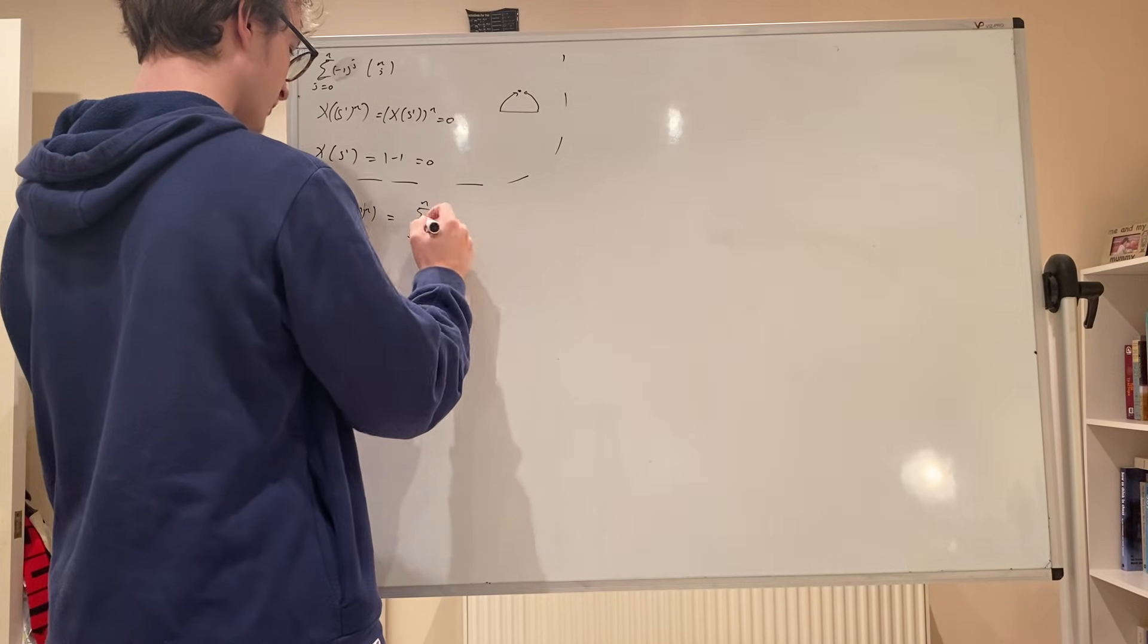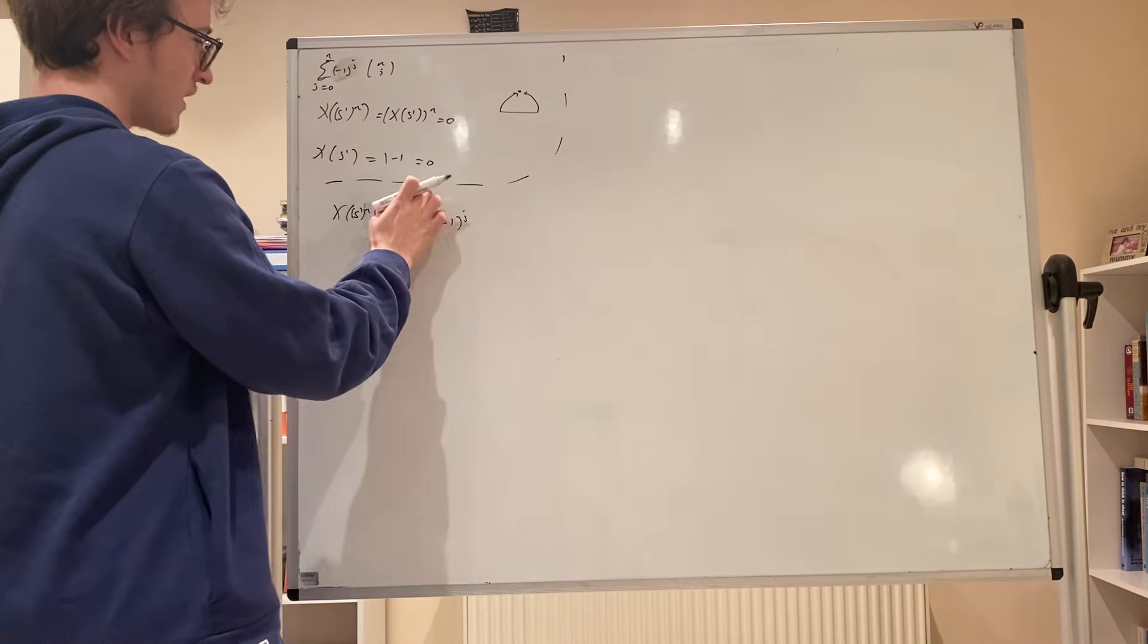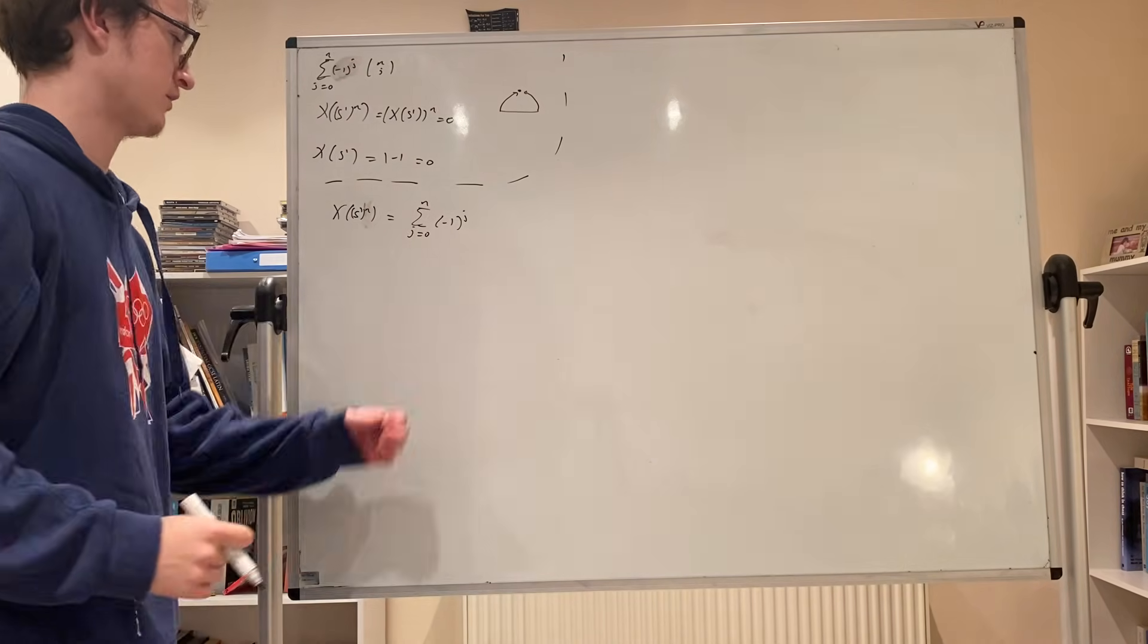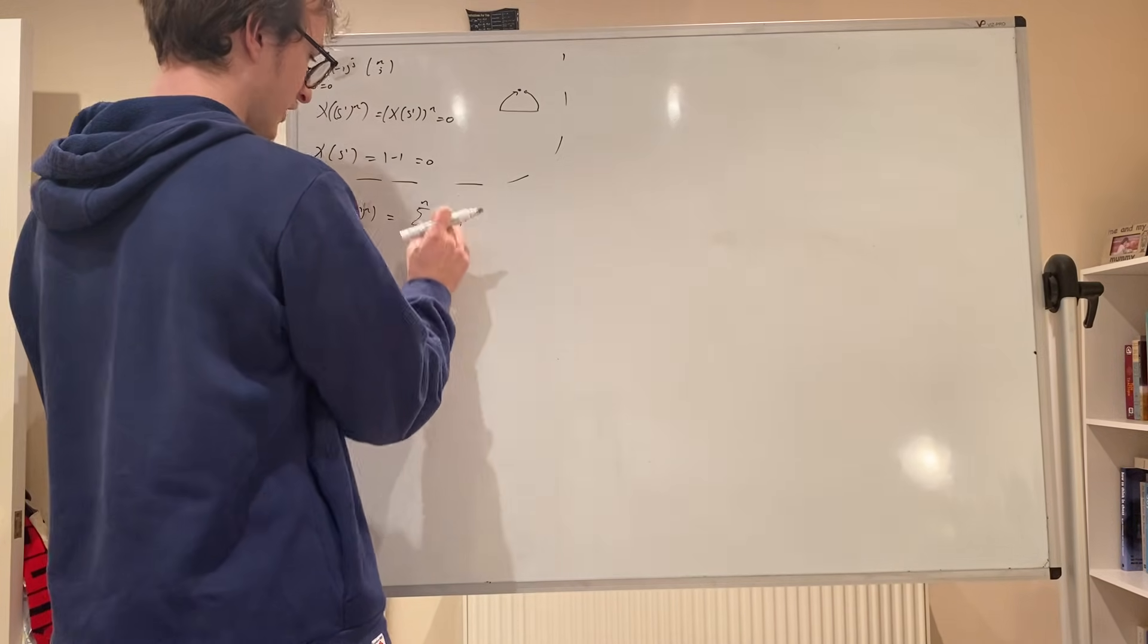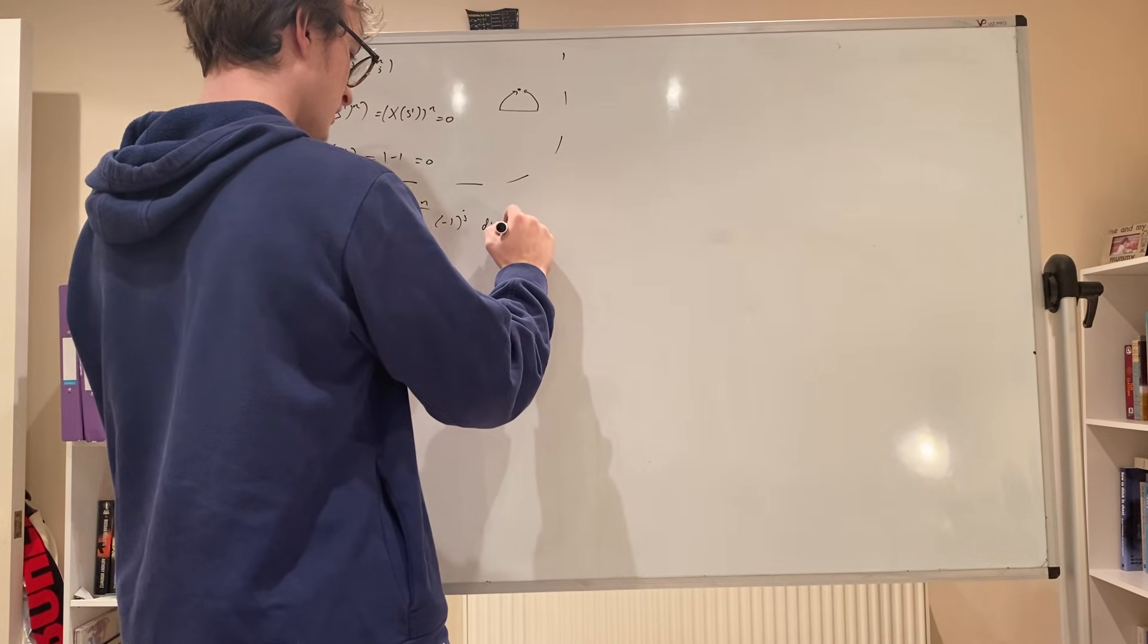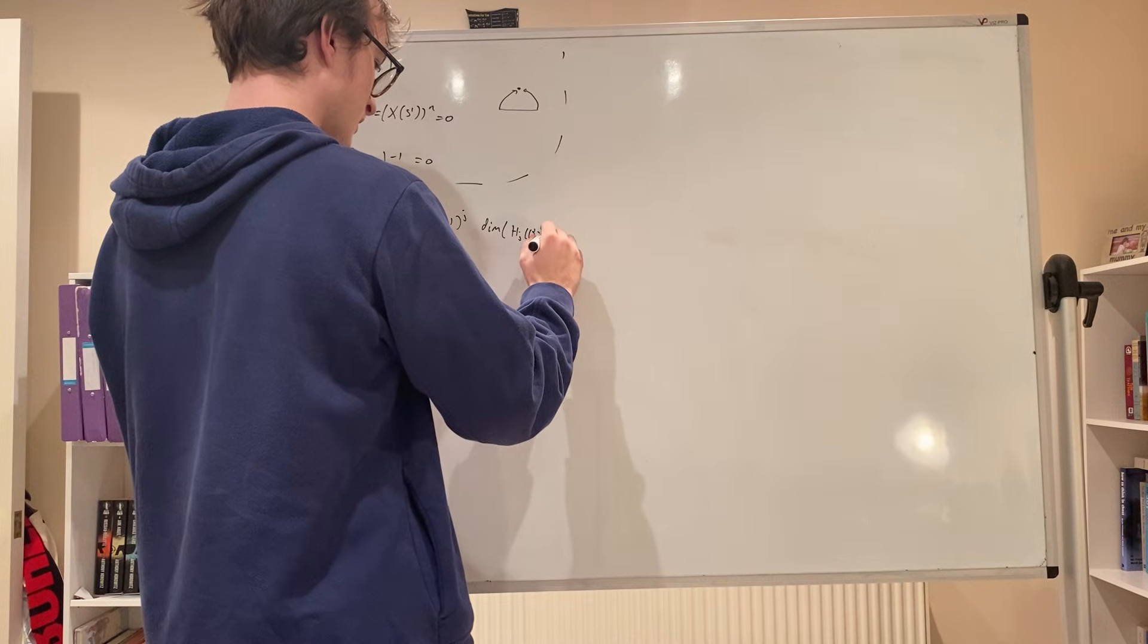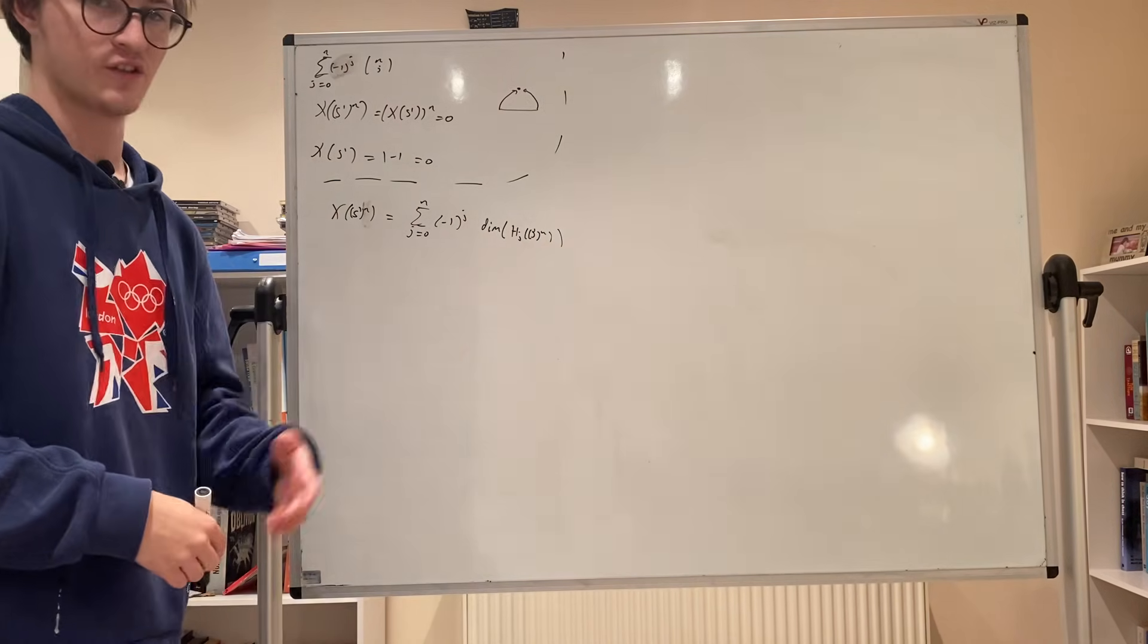This is the sum from j equals 0 to n of (-1)^j - when j is bigger than n then the cohomologies can be zero so we go from j equals 0 to n - times the dimension of H^j of S^1 to the n. We're working with coefficients in the integers here.